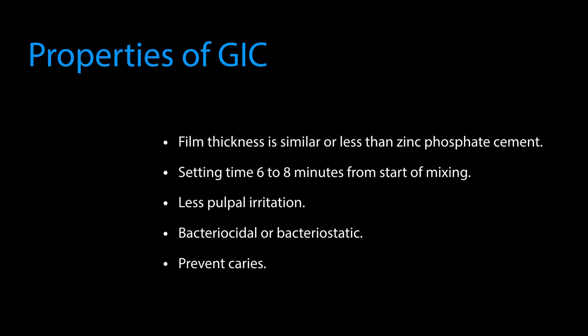Properties of glass ionomer cement: film thickness is similar to or less than zinc phosphate cement; less pulpal irritation is observed; setting time is six to eight minutes from start of mixing, depending on the powder-liquid ratio. It is bactericidal or bacteriostatic, preventing caries. It has low solubility, coefficient of thermal expansion similar to dentine, high compressive strength, chemical bond to tooth structure, but low fracture strength, low shear strength, is brittle, lacks translucency, and has a rough surface texture.